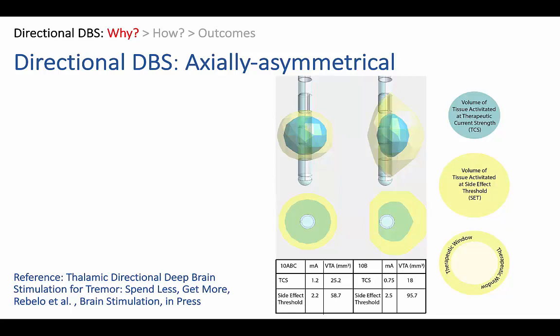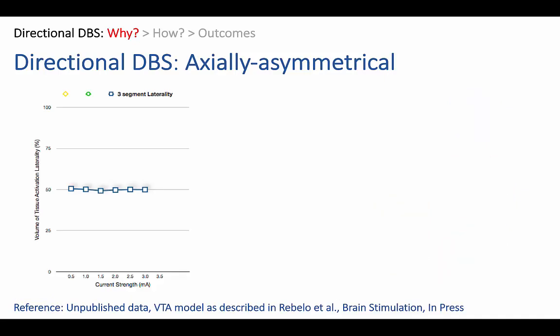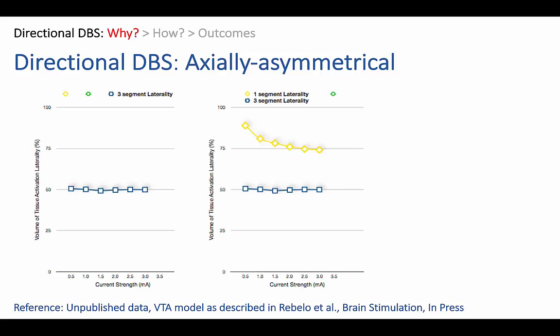Understanding these small differences is crucial to getting the most out of directional DBS systems. In our case series we've modeled how much laterality directional DBS can produce. If you imagine that a DBS lead is divided into two hemiplanes, omnidirectional stimulation produces a volume of tissue activation that is equal in both hemiplanes — 50-50 — so there's no laterality. Directional stimulation through a single segment produces a high degree of laterality at low current strength that slowly falls as you increase the current strength, because current leaks towards the opposite hemifield.